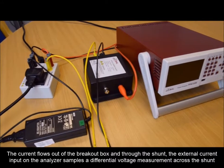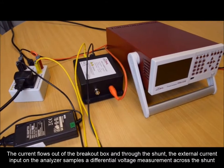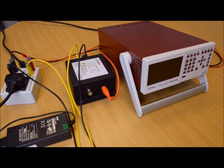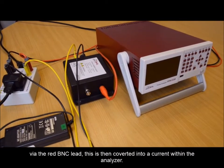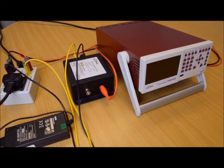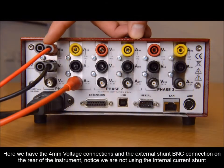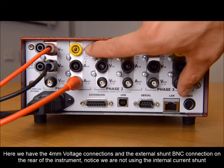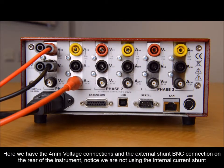The external current input on the analyzer samples the differential voltage measurements across the shunt by the red BNC lead. This is then converted into a current within the analyzer. Here we have the four millimeter voltage connections and the external shunt BNC connection on the rear of the instrument.